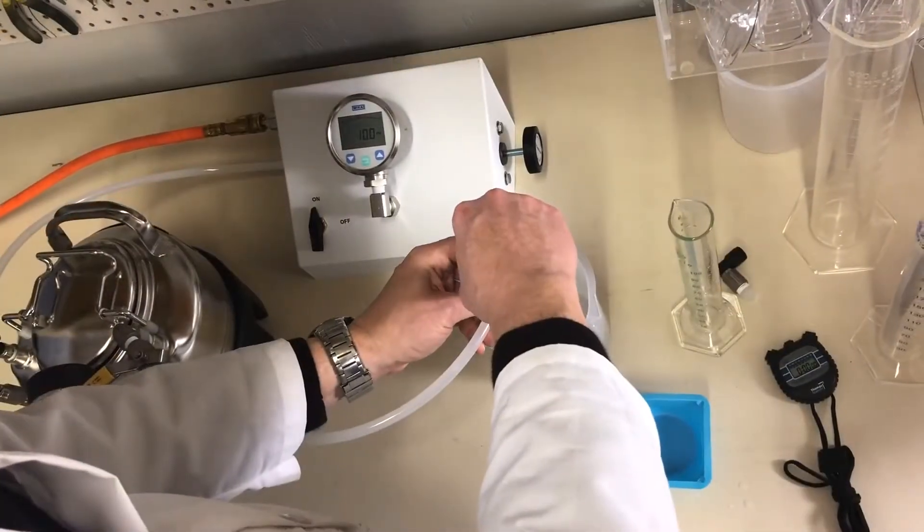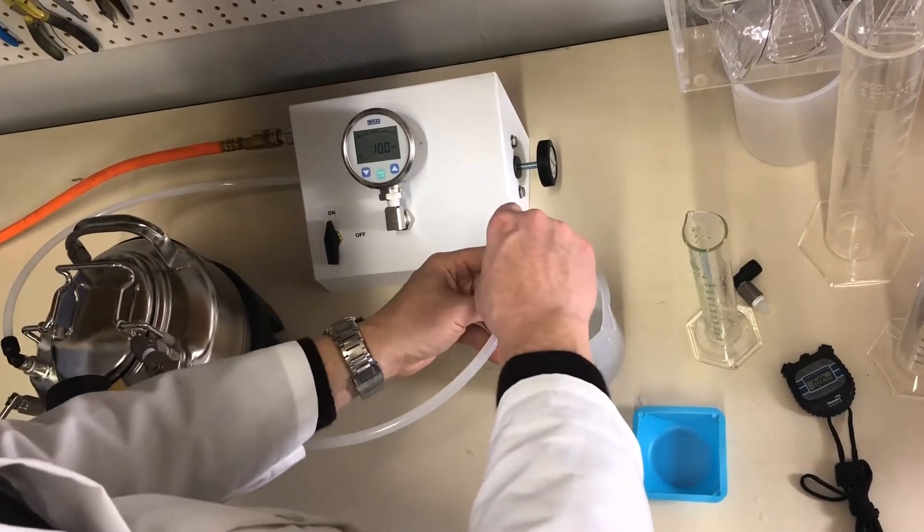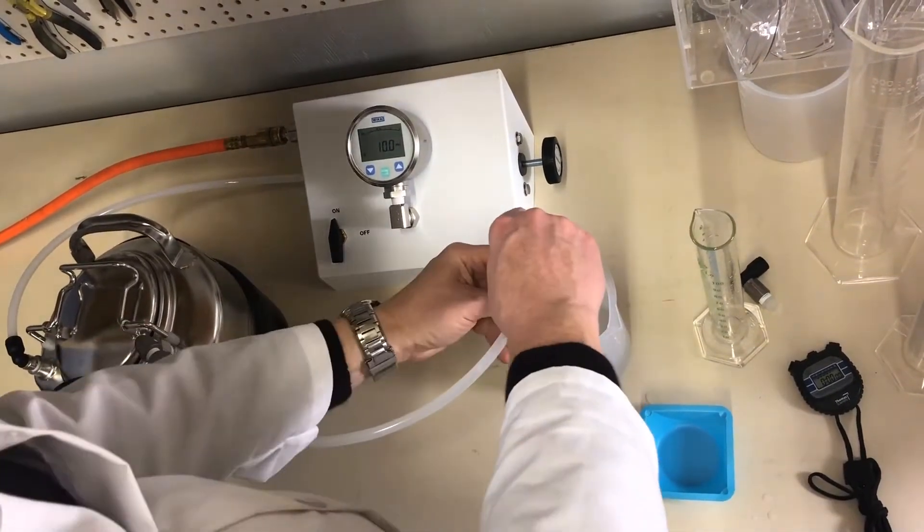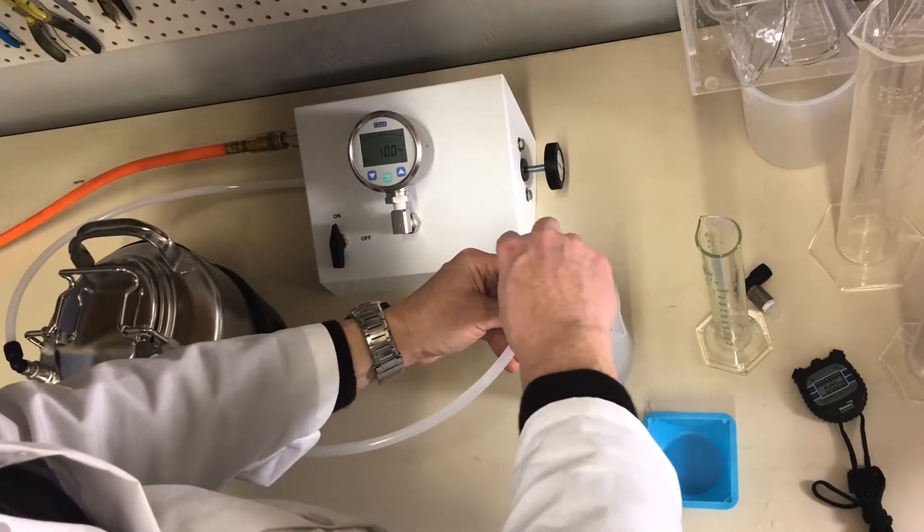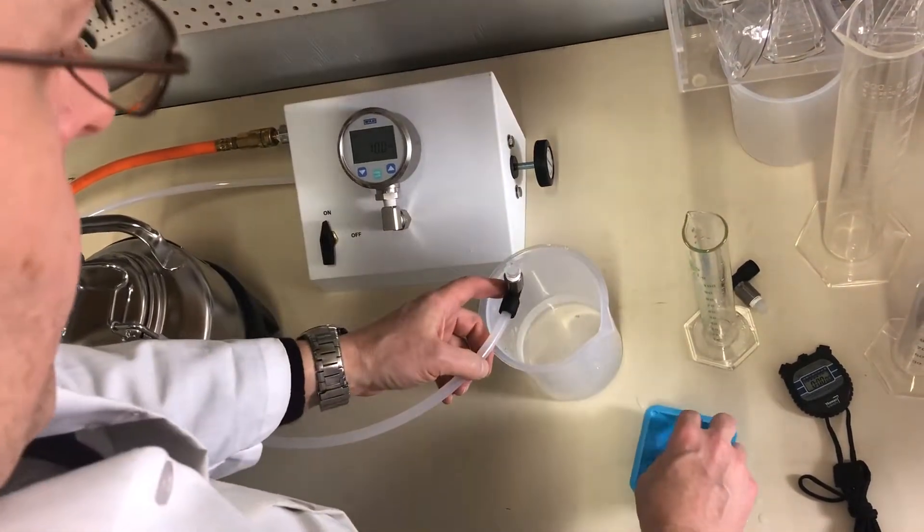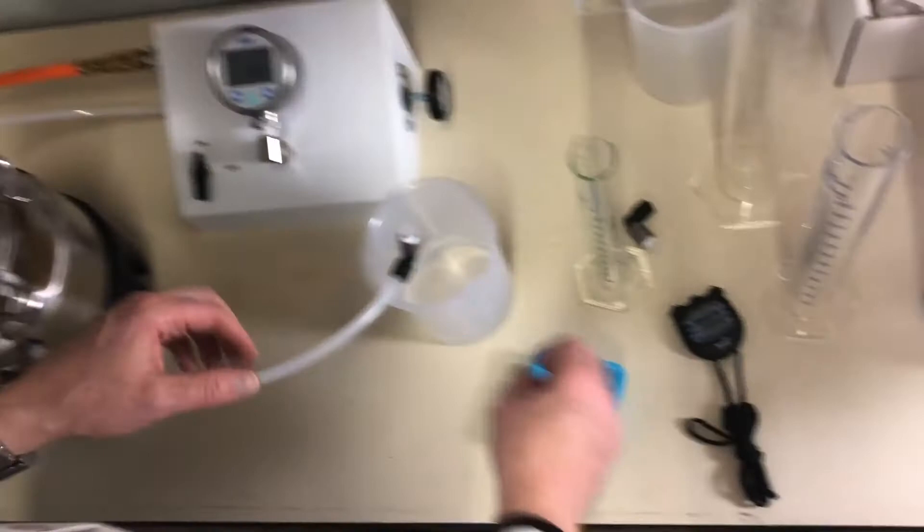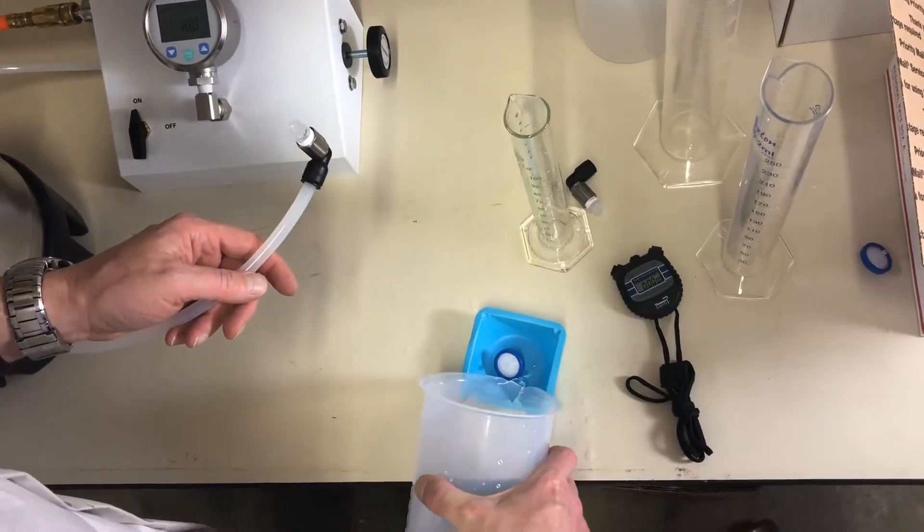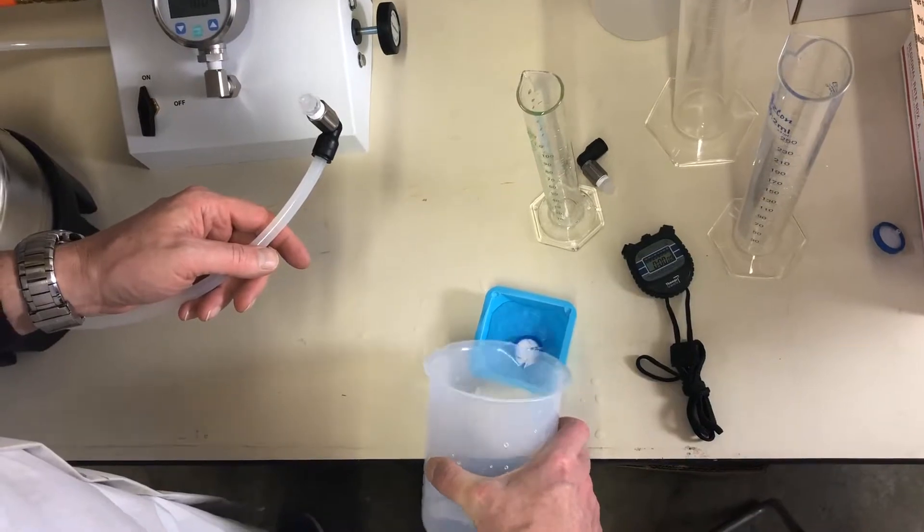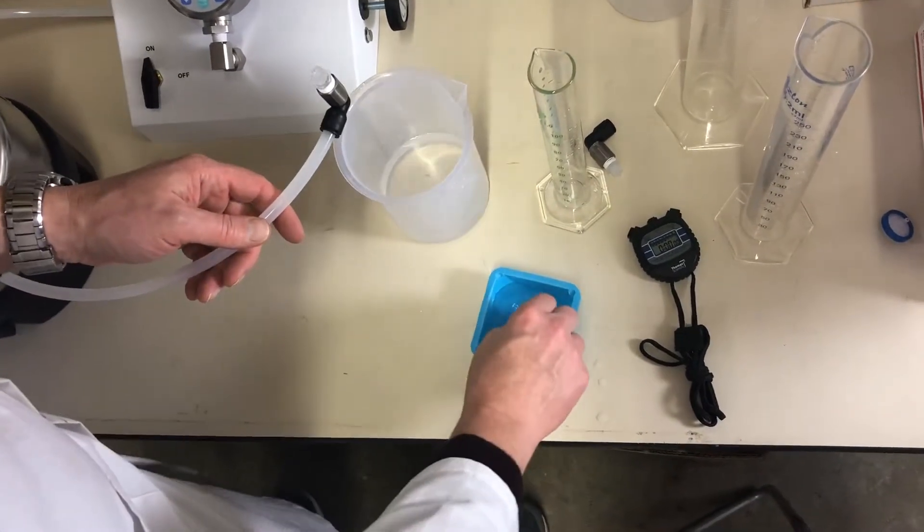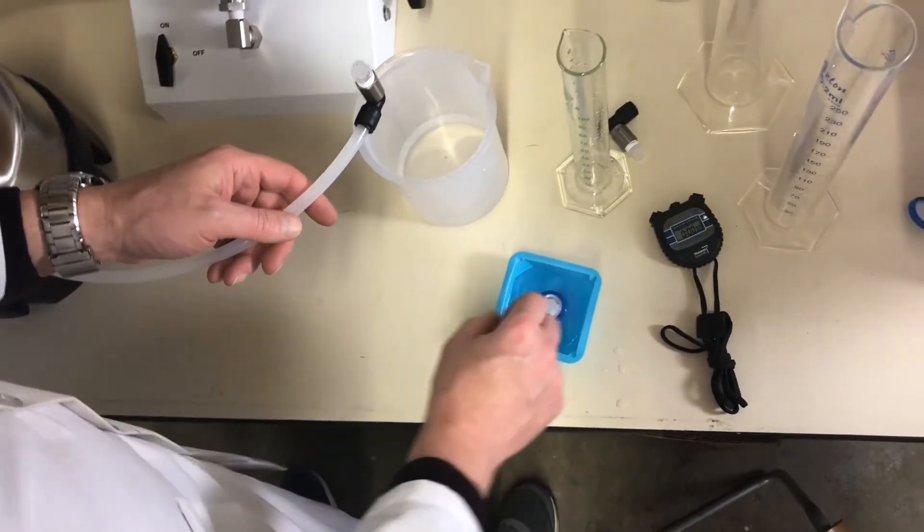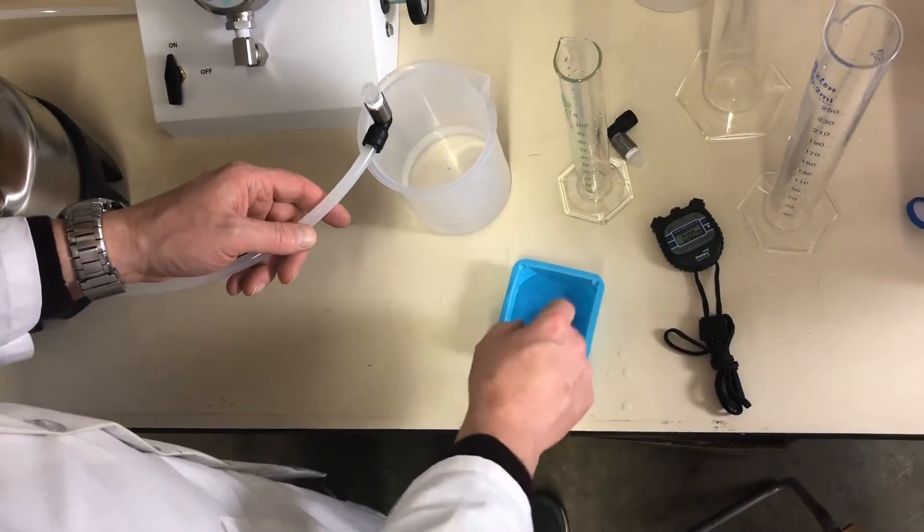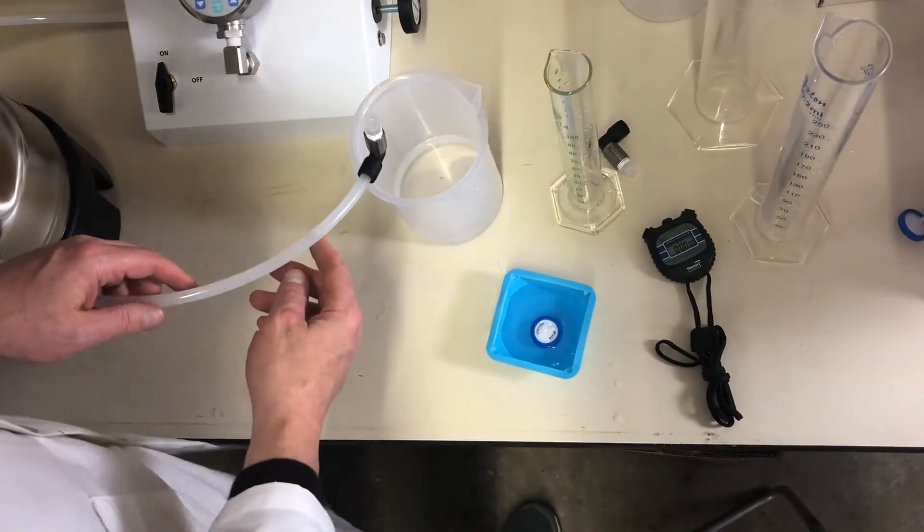Make sure the valve is closed. Unscrew the filter to remove it, then store it in the dish full of water to make sure that it stays wetted prior to bubble point testing.